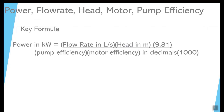Let's take a look at the key formula. Power in kilowatts equals flow rate in liters per second multiplied by the head — that's how much you're going to lift it — multiplied by 9.81. That 9.81 is the same value as in physics: the acceleration of gravity, 9.81 meters per second squared, which takes into account the effect of gravity that the pump has to fight against.